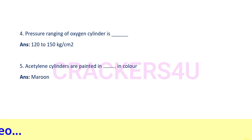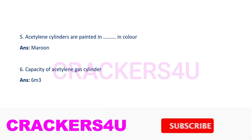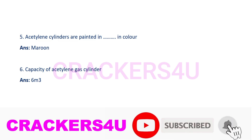Question number five: Acetylene cylinders are painted in dash in color. Answer: Maroon. Acetylene cylinders are painted in maroon in color.